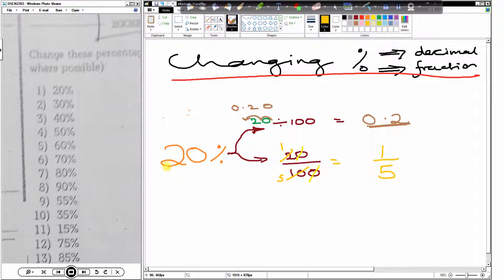So twenty percent, for me, as a decimal is? Zero point two. Twenty percent as a fraction is? One fifth. And that is the method that we use to work out these questions.